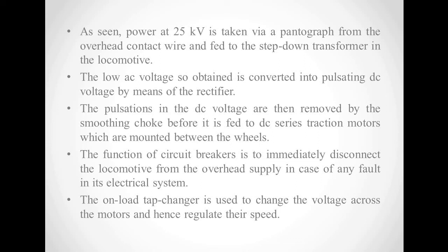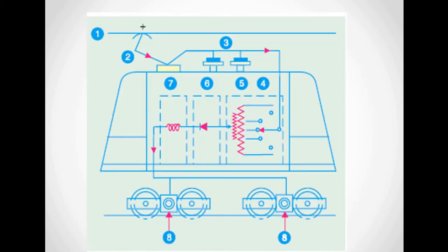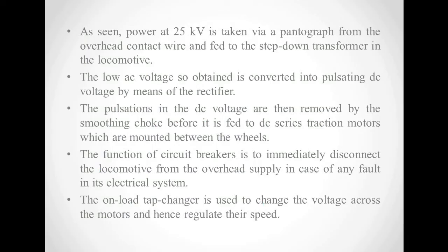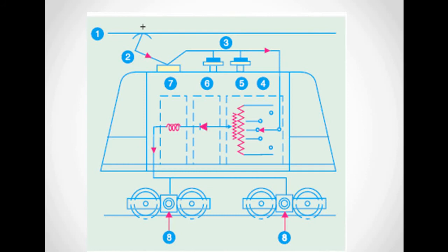The function of the circuit breaker is to immediately disconnect the locomotive from the overhead supply in case of any fault in the electrical system. The on-load tap changer is used to change the voltage across the motor and hence regulate the speed of the DC traction motor, which is the eighth component. The smoothing choke feeds the DC power to the DC traction motors which are mounted in between the wheels.